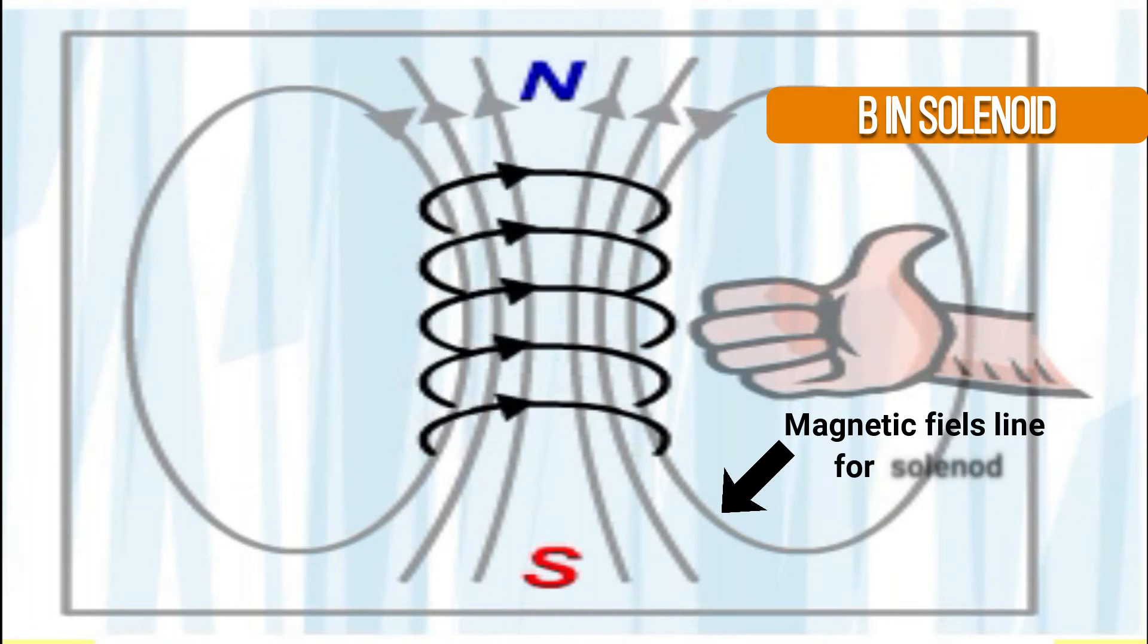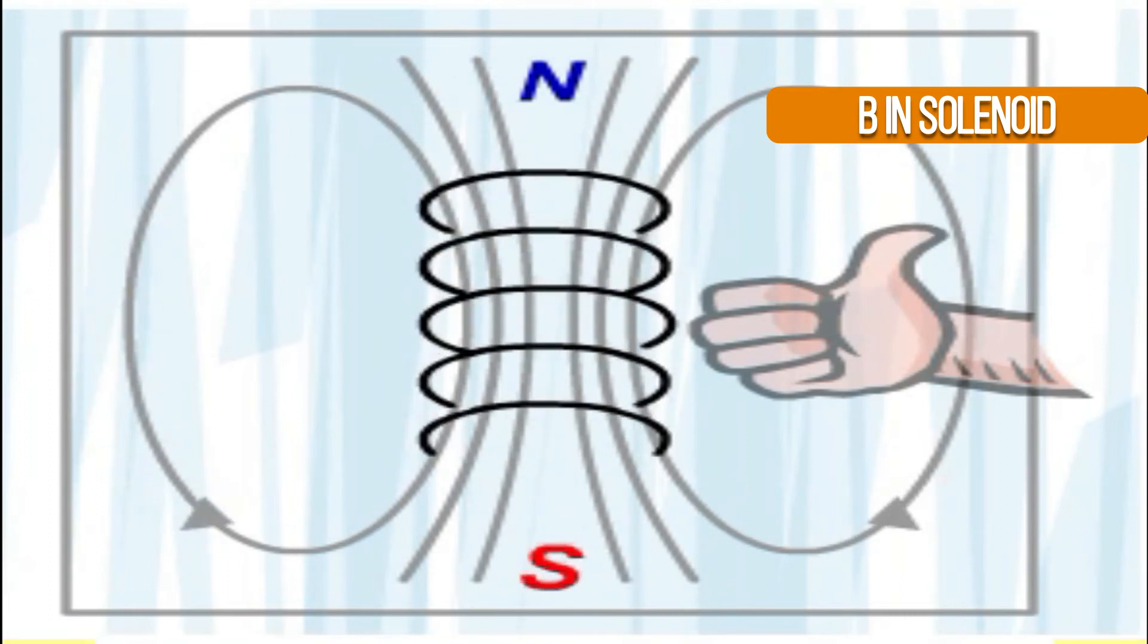The end of a solenoid where the field lines start is called the North Pole. And the end where the lines enter the solenoid is the South Pole.